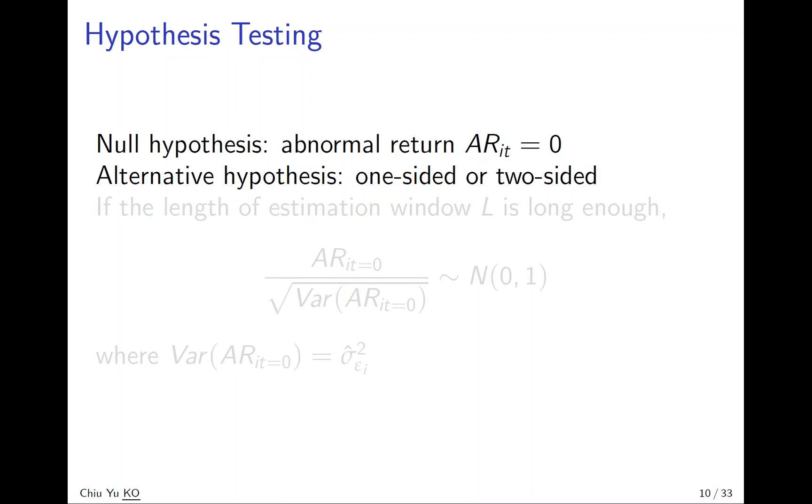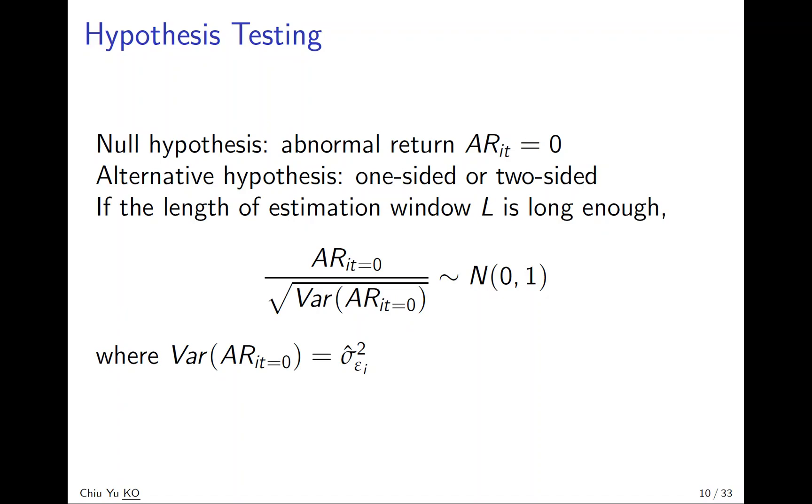And the distribution of the abnormal return is quite complicated, but if the length of the estimation window is long enough, say a year, as we have said before.